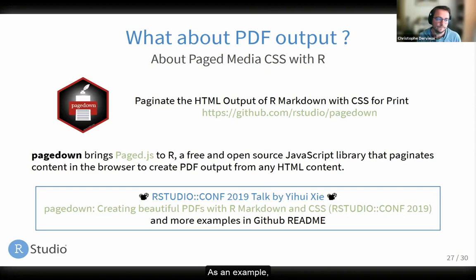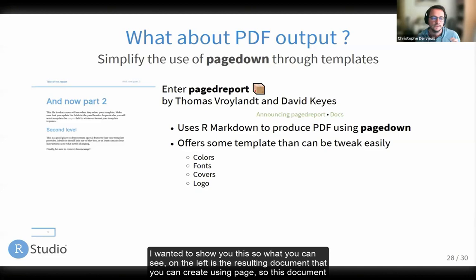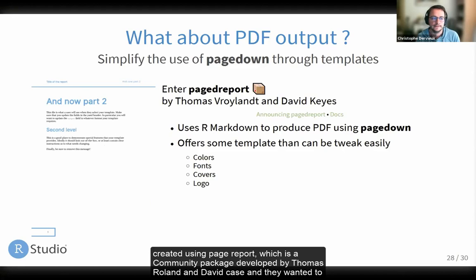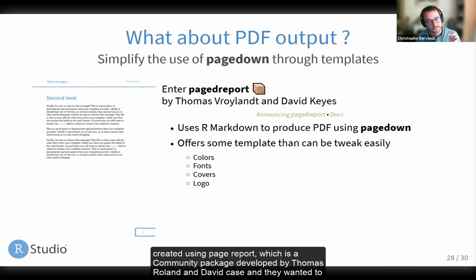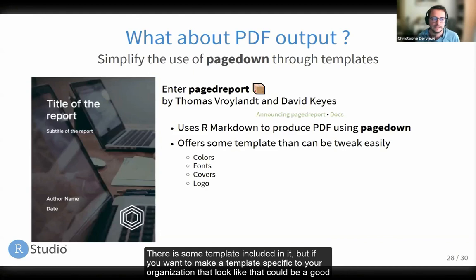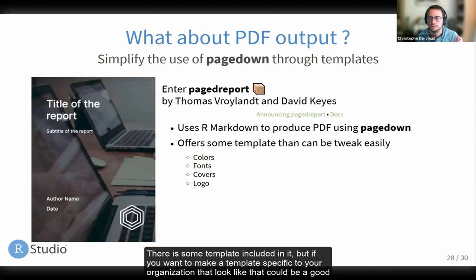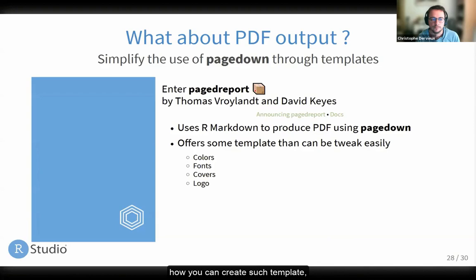As an example, what you can see on the left is a resulting document you can create using pagedown — this document is created using pageReport, a community package developed by Thomas Roh and David Keyes. They wanted to simplify the use of pagedown through templates, because pagedown is the core tool to customize. They provide templates where you can change colors, fonts, the cover, the logo. It can be a good way to start and see how to create such templates.